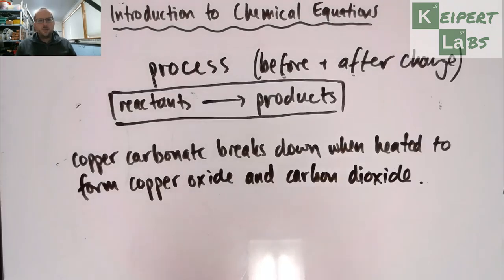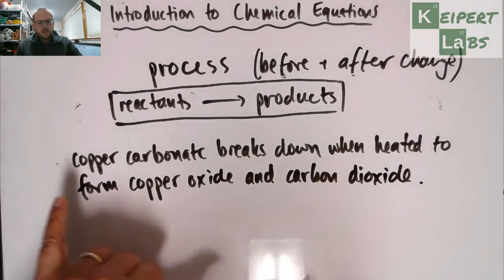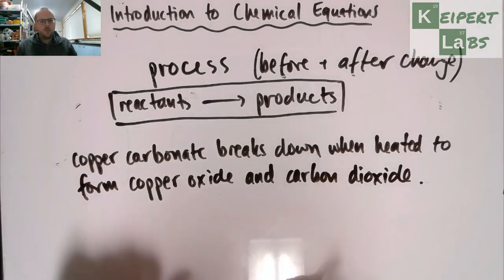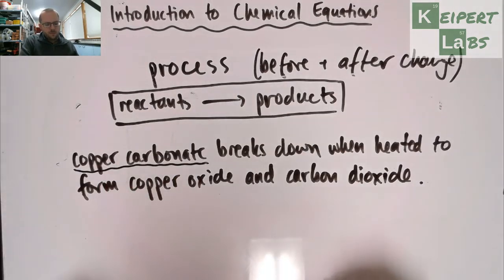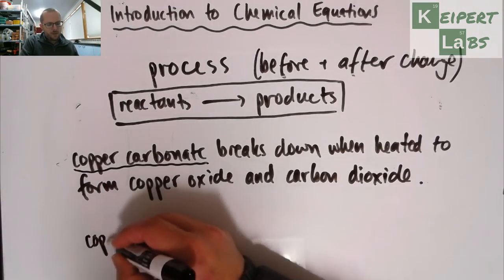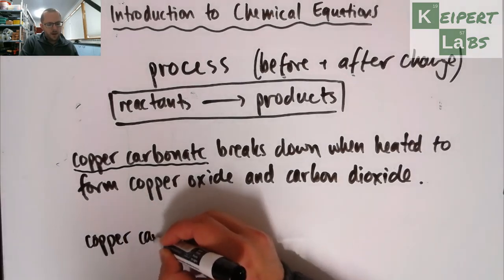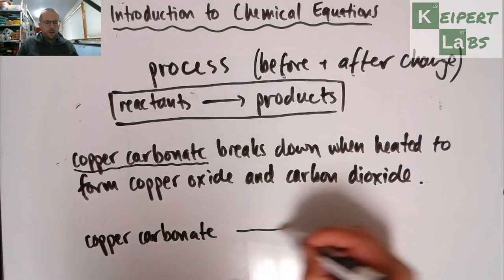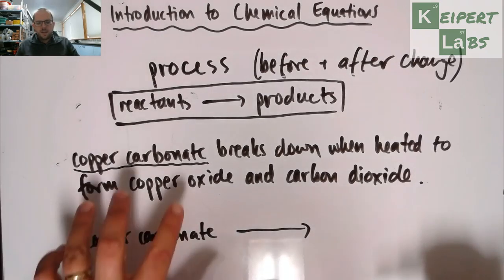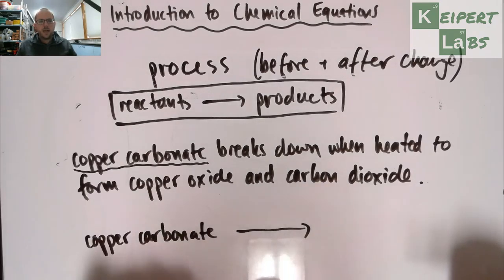Let me show you another example. Copper carbonate breaks down when heated to form copper oxide and carbon dioxide. So same sort of thing here. We need to identify what are our reactants, what are our products. So our reactant is copper carbonate. So I'm going to write that on the left of my equation. And then I'm going to draw an arrow. Because I can identify that this is, in looking at my statement, this is the only reactant that I have.